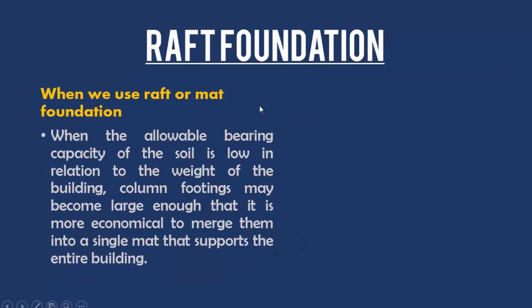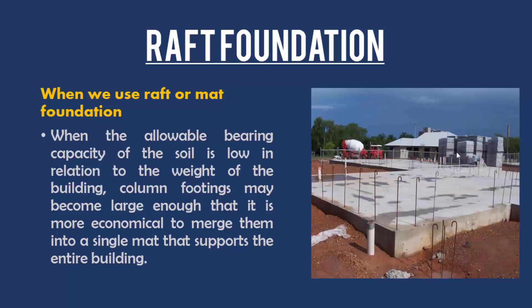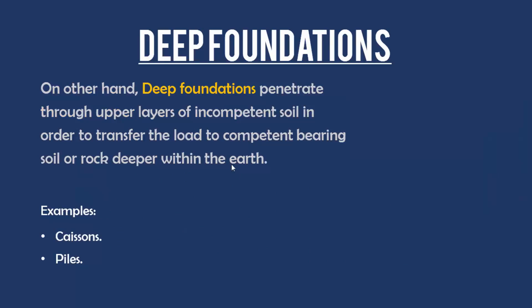The raft foundation is used when the allowable bearing capacity of soil is low in relation to the weight of the building. Column footings may become large enough that it is more economical to merge them into a single mat that supports the entire building. So we use it when the bearing capacity is low and it is more economical to merge all the column footings into one mat.